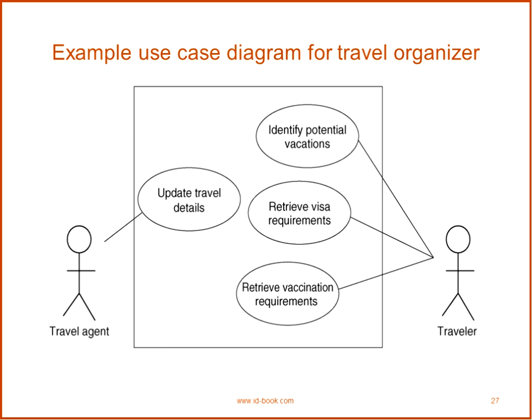This is the use case diagram for the travel organizer. This box is the system boundary; these are the use cases. Travel is one of the users — they can identify potential vacations, retrieve visa requirements, and retrieve vaccination requirements. The travel agent can update travel details inside the system according to travel requirements.